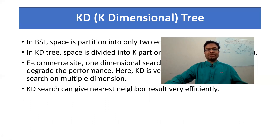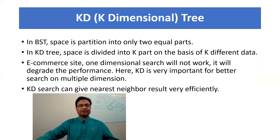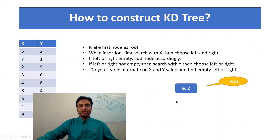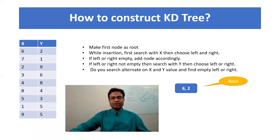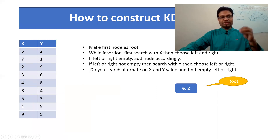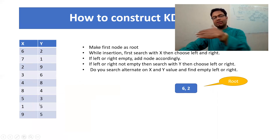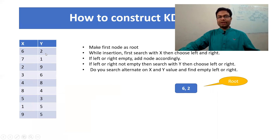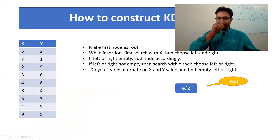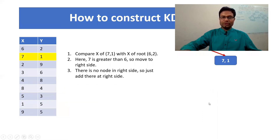In BST, space partition is only for 2 equal parts, but in the KD Tree we have K parts. Let's see how to construct the KD Tree — this is the important thing. If you have given data in the KD Tree, what you have to do: take the first data and make it the root. So x value is 6, y value is 2, so the node value is (6, 2). Consider this (6, 2) as the root.